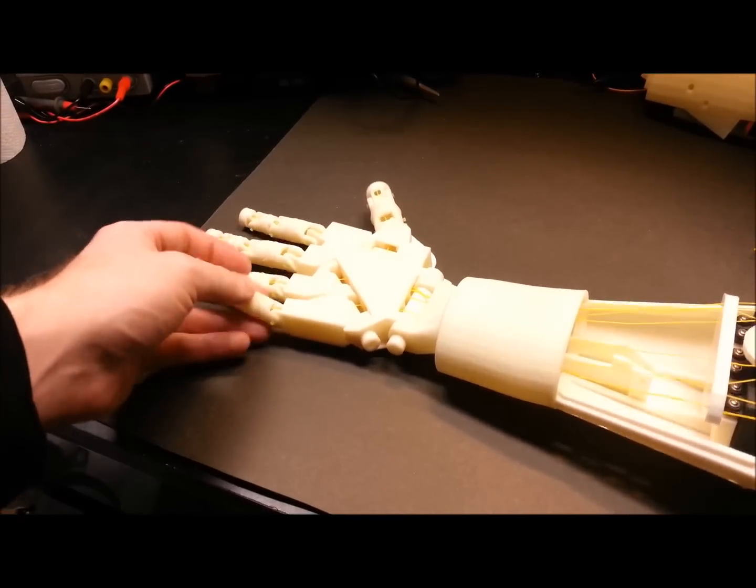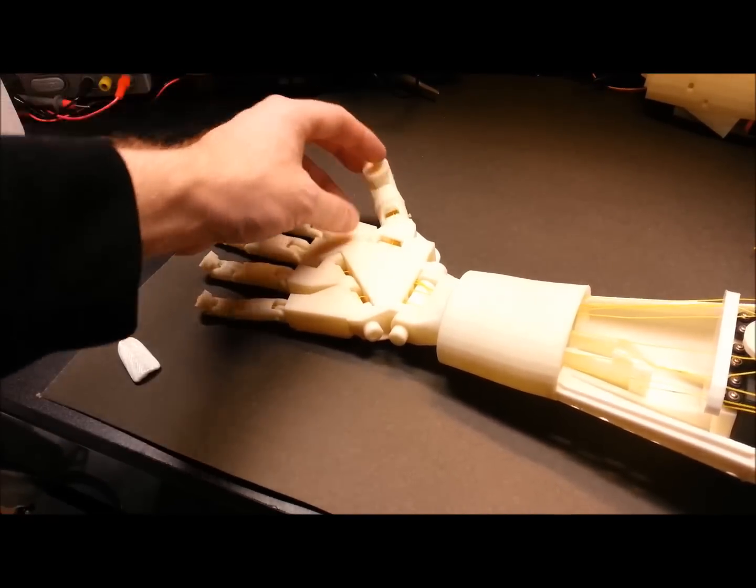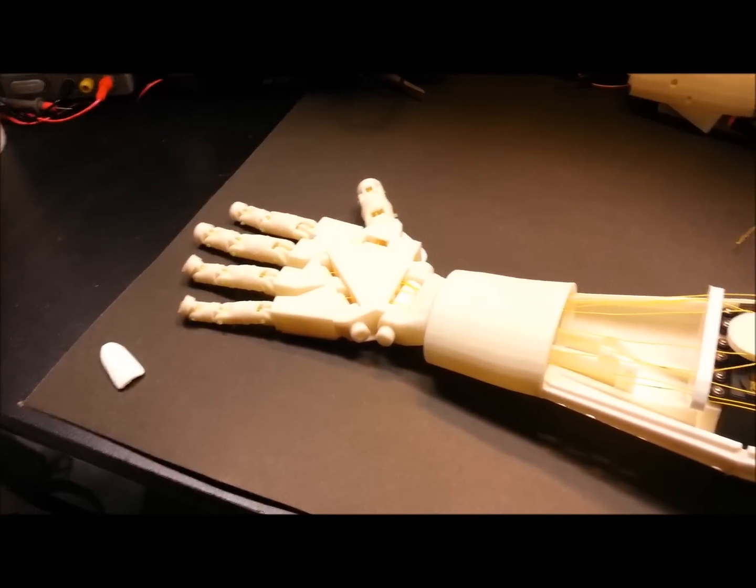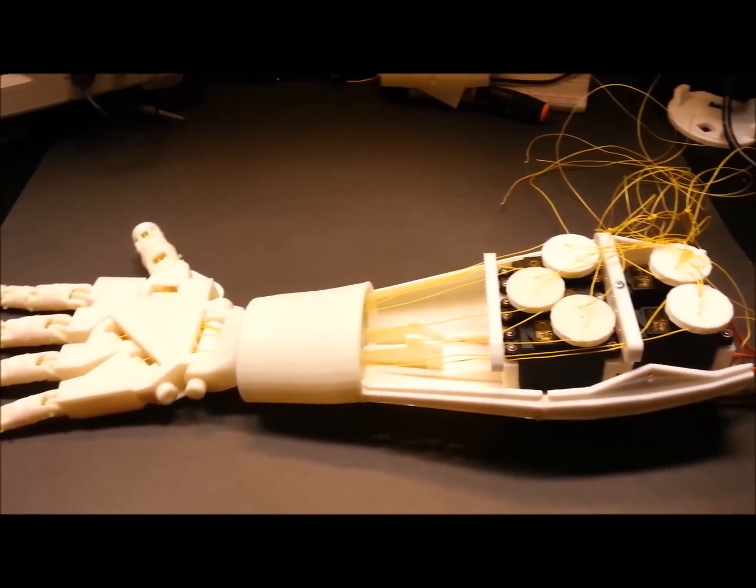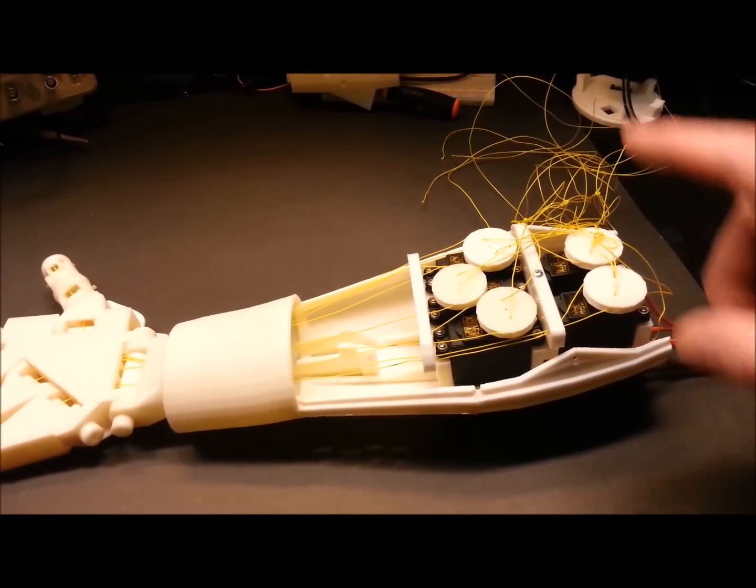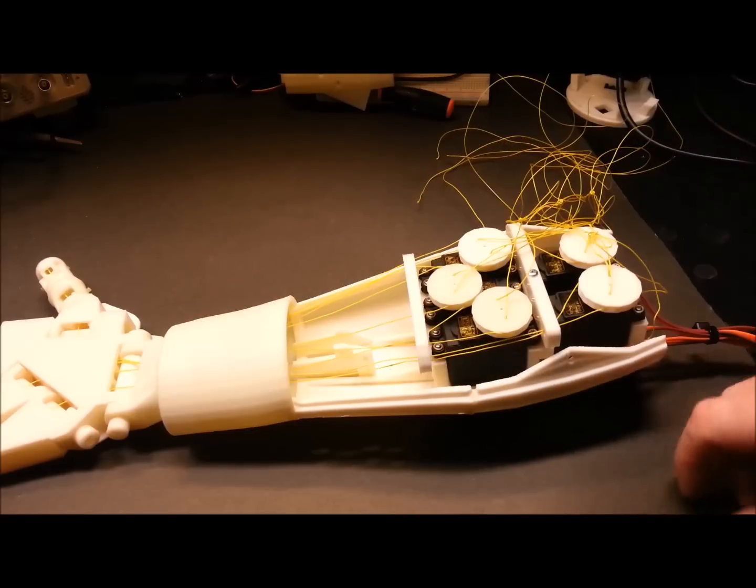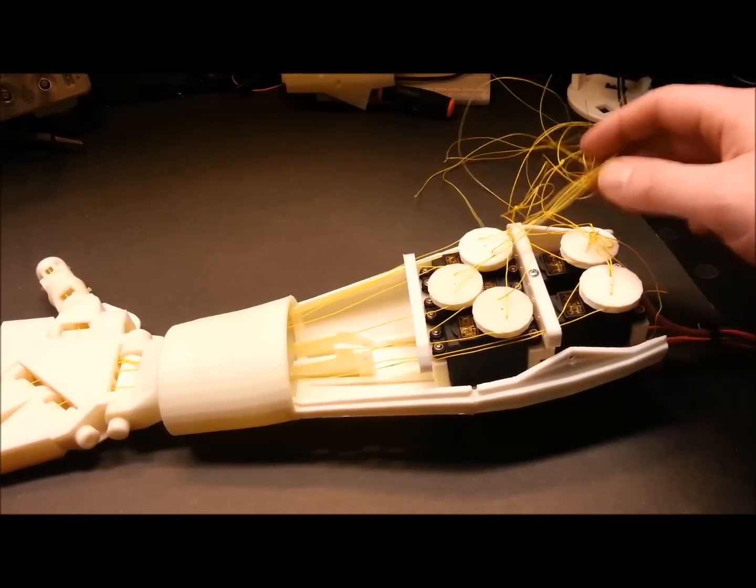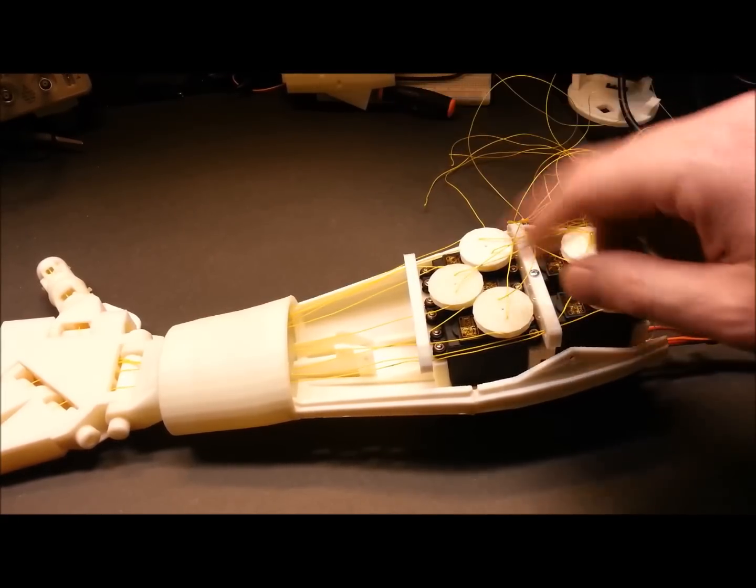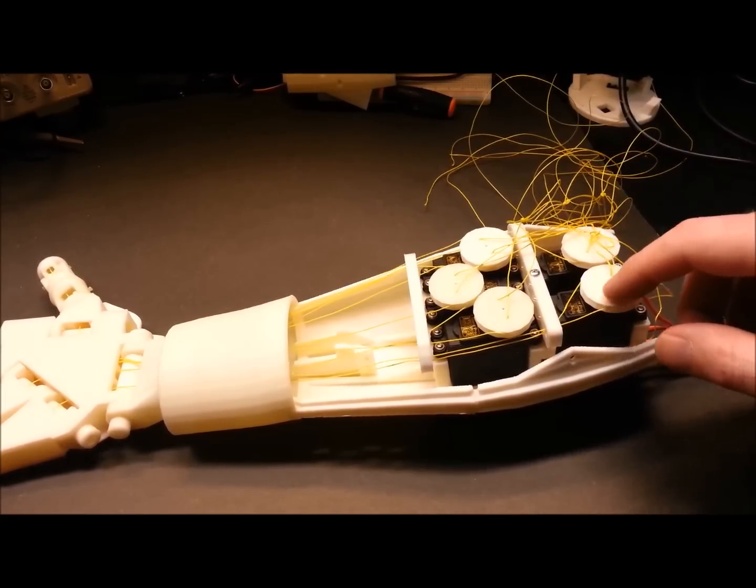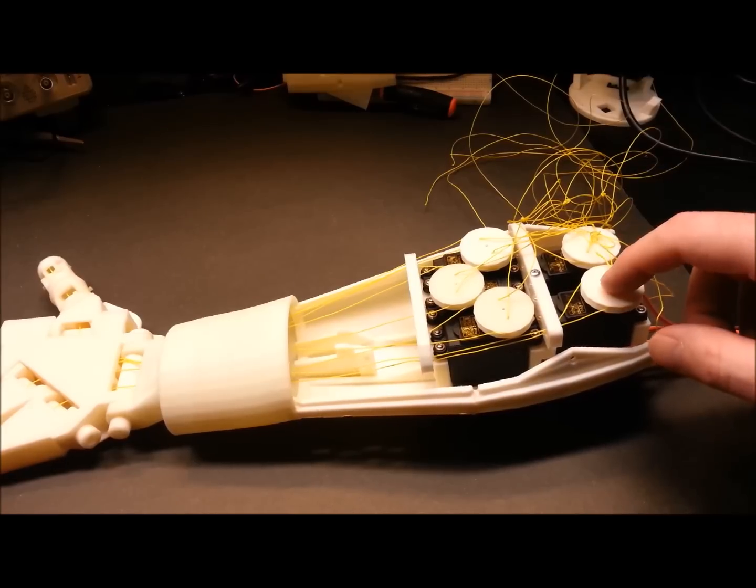Fingers are holding up great so far. The fishing line - no problems. So tonight my plan is to snip the 20-pound fishing line at the other end and tie knots in it. I'll leave a little excess for now, and then I have to home all the servos to full extend position.